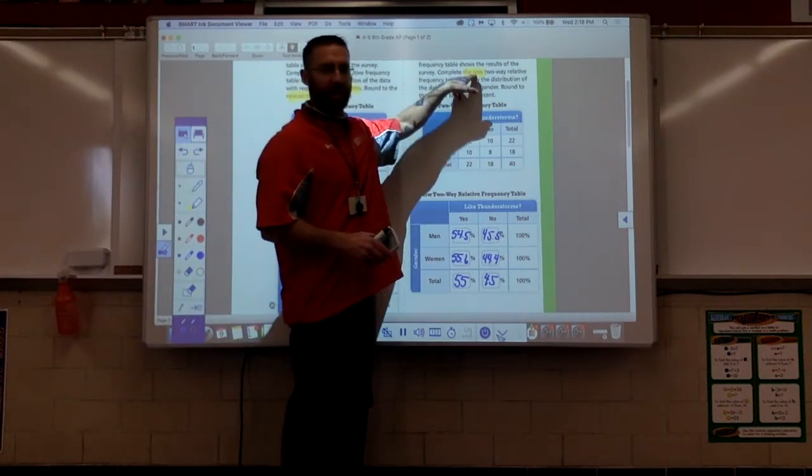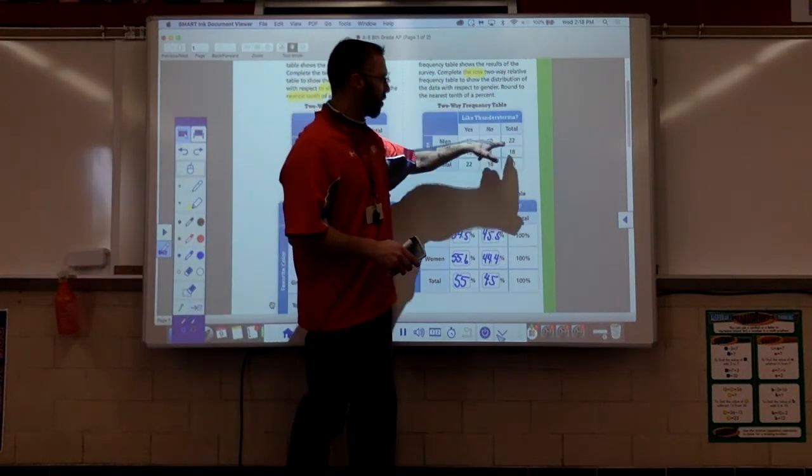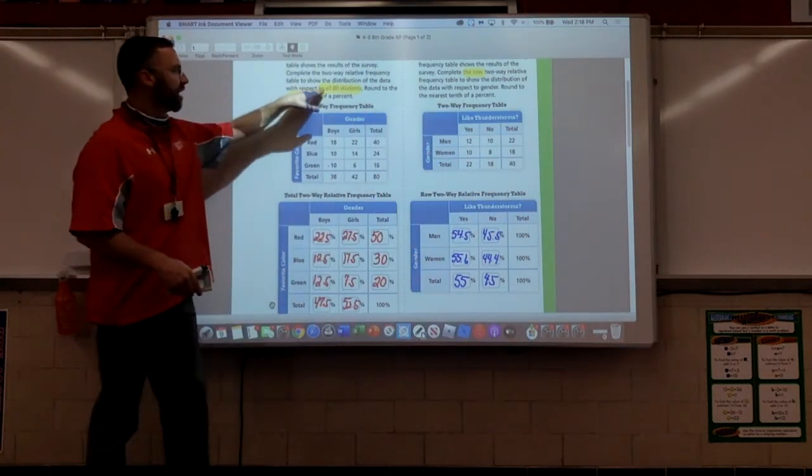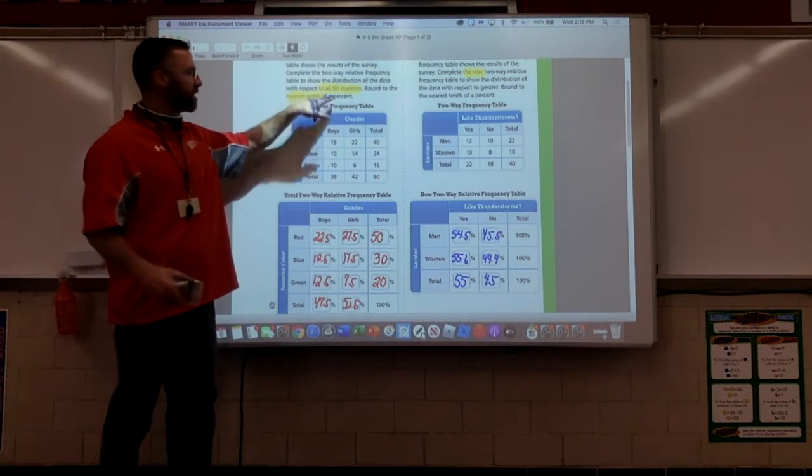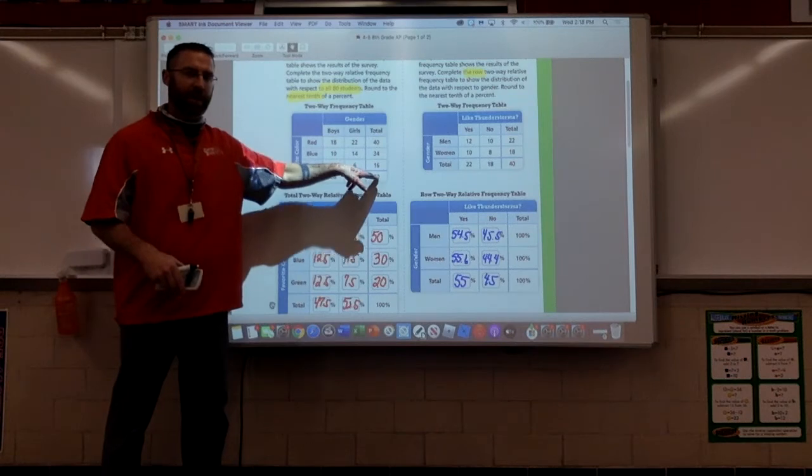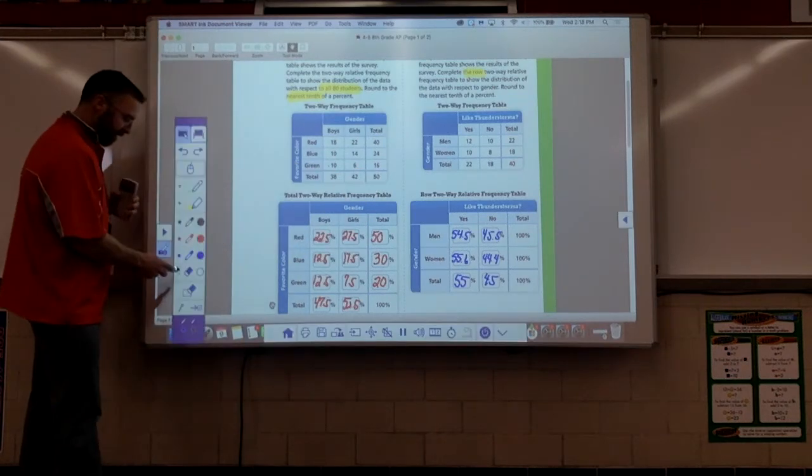We're calculating by rows, which means we're going to be dividing by the total of each row. Over here, we were making a total frequency table to all 80 students, we were dividing everything by the total there. Be a good reader.